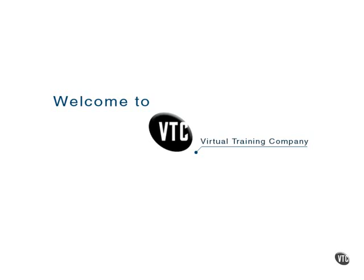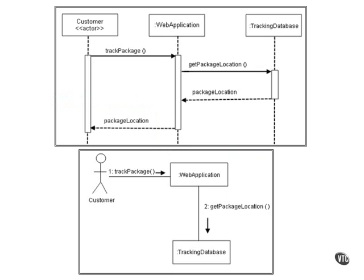As you know, sequence diagrams and communication diagrams are both kinds of interaction diagrams. These diagrams show the objects in a system and the messages that pass among those objects, or those participants. These diagrams are semantically equivalent, and many UML tools can convert between them.